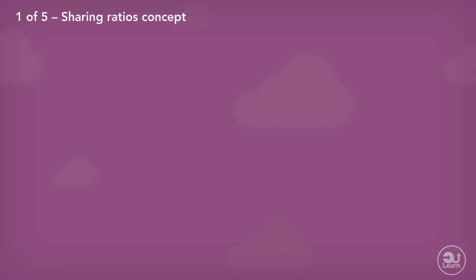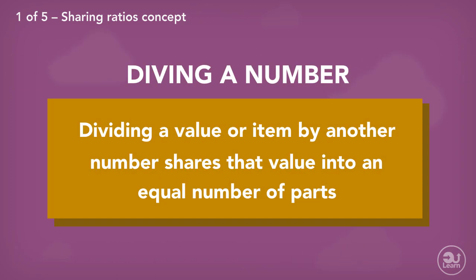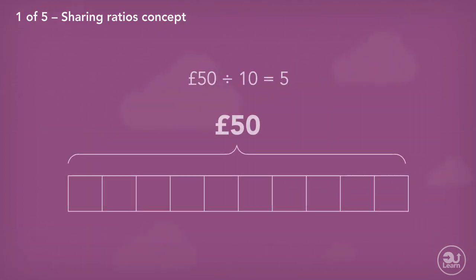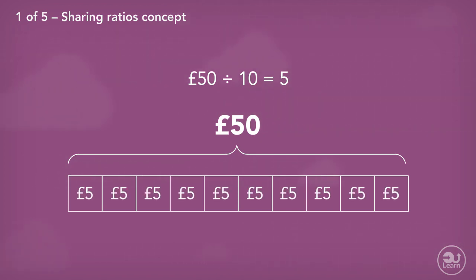Normally, when we divide, what happens is that we are sharing a number into smaller, equal parts. The number of parts are defined by the divider. The key here is that at the end of the division, all the pieces are equal in size. For example, 50 pounds divided by 10 is 5 pounds, with each piece being equal in size.